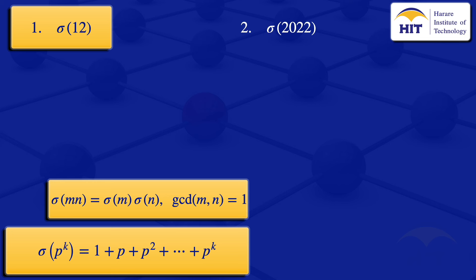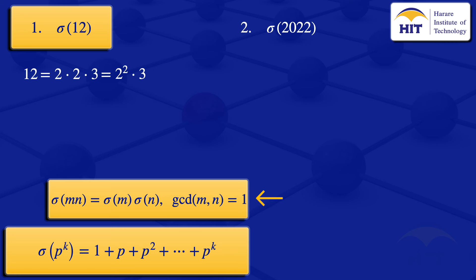Looking at sigma(12), we write 12 as a product of its prime factors: 2 × 2 × 3, which is 2² × 3. Since 4 and 3 are relatively prime, we can use the multiplicative property, giving us sigma(12) = sigma(2²) × sigma(3).